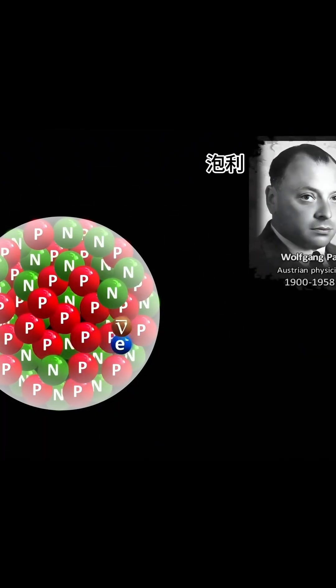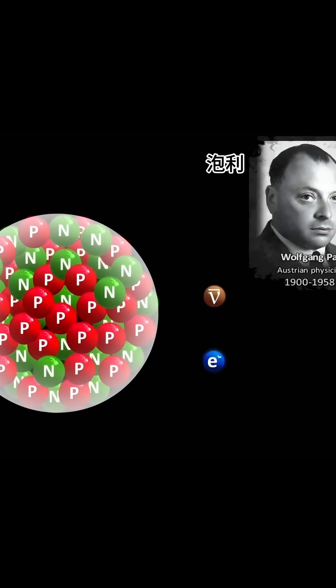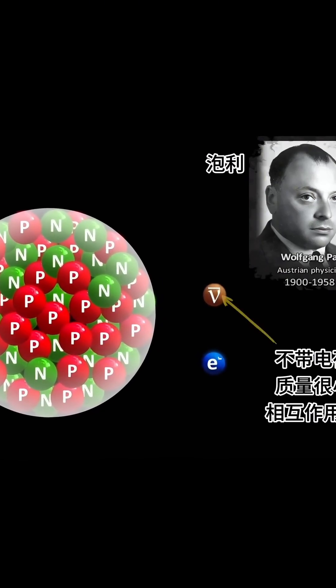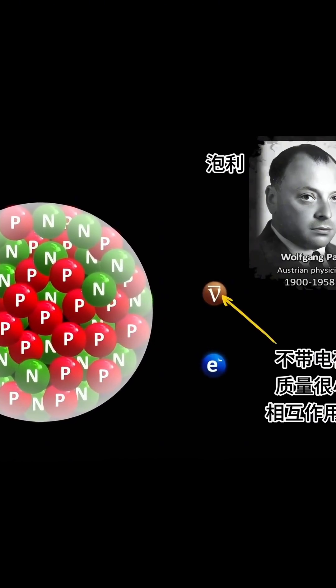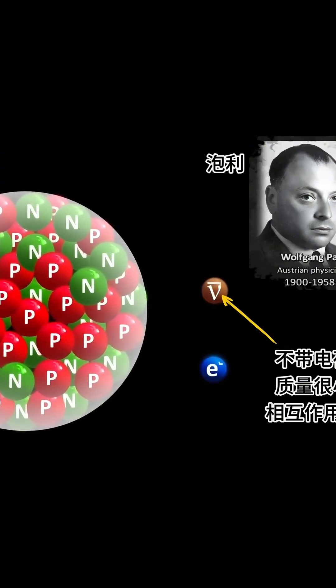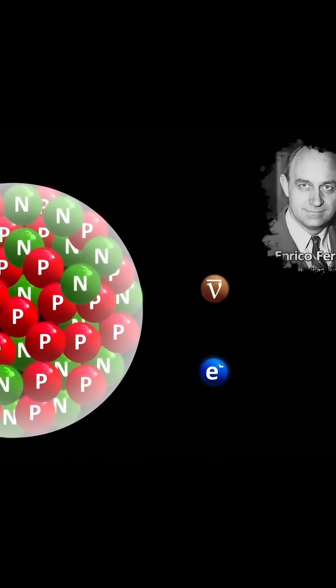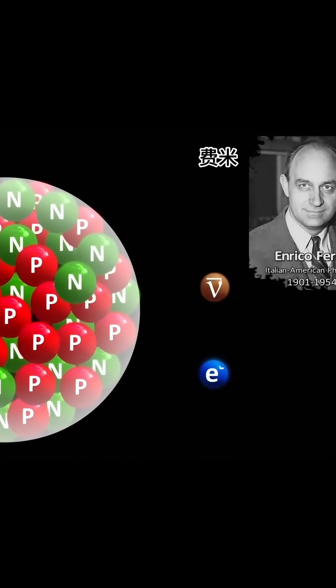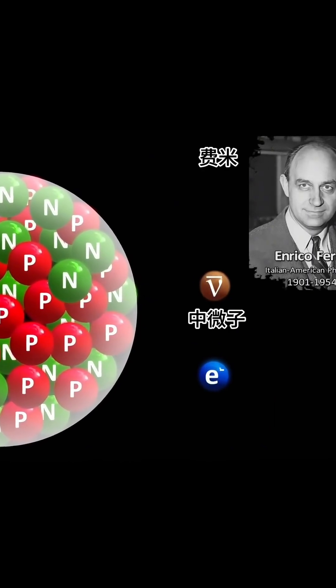In 1930, physicist Wolfgang Pauli proposed a hypothesis. A third, undetected particle carried away the missing energy and momentum. He described a new particle with no charge, little or no mass, and a spin of one-half. In 1934, Enrico Fermi expanded on this theory and named it the neutrino, Italian for little neutral one.